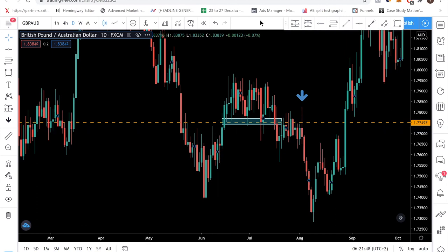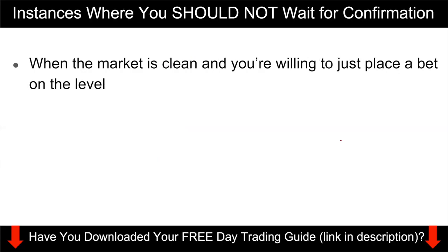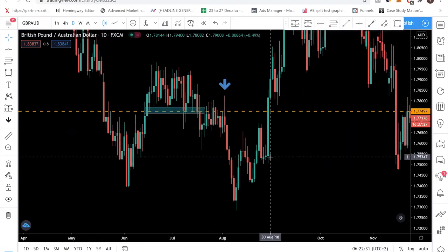Now let's go on to the last part: when do you not need to wait for confirmation? When should you not wait — meaning when should you do a limit order? If you want to do a retracement trade and just do a buy limit or sell limit, this is just the opposite. You want to do this when the market is very clean, levels are being respected, and you can see clearly. What you're trying to do is place a bet on that level and say this level is likely to hold — let me just enter here. Let me go into the charts to show you a clean example so you can contrast the clean versus the unclean scenario.